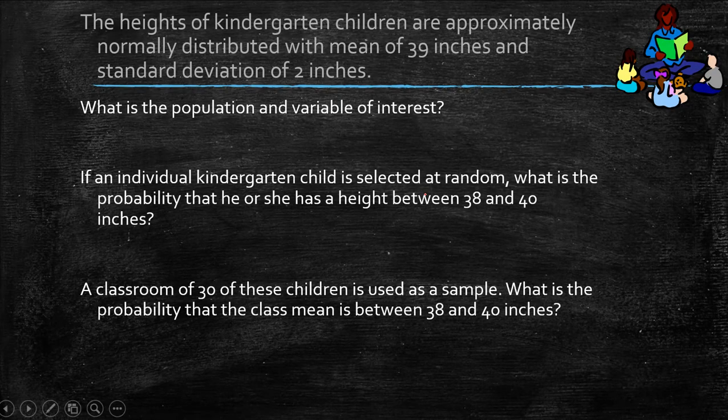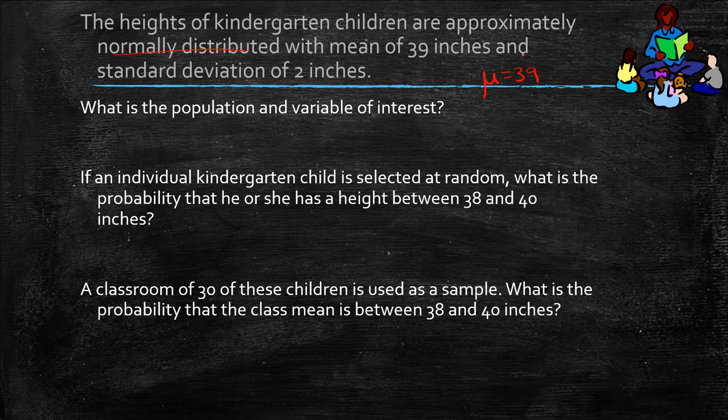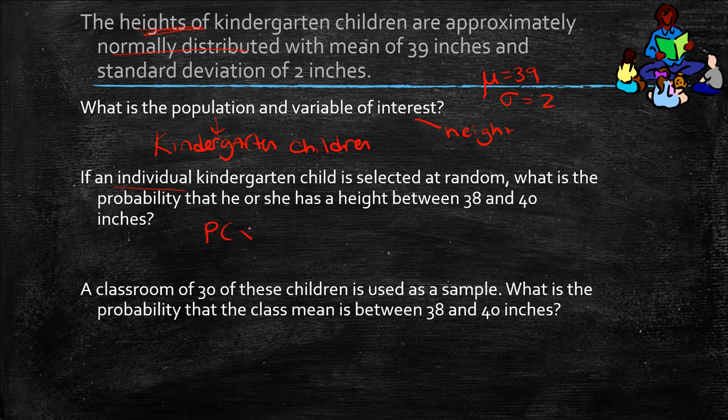Okay, so let's keep going. The heights of kindergarten children are approximately normally distributed with a mean of 39 inches and a standard deviation of 2. So our population are those kindergarten children. And the variable of interest, what about those kindergarten children have 39 and 2? Well, it's the inches. That is their height. If an individual kindergarten child is selected at random, what is the probability that he or she, so x, is between 38 and 40 inches?